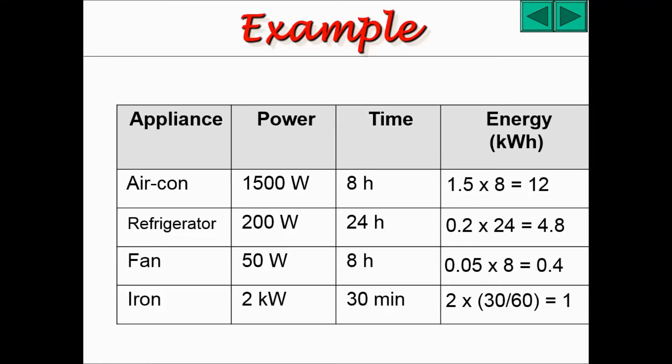The iron has 2 kilowatts of power, and the time taken is 30 minutes. These 30 minutes need to be converted into hours. Therefore, it should be 30 divided by 60, which gets you half. 2 times half will give you 1 kilowatt hour of energy.